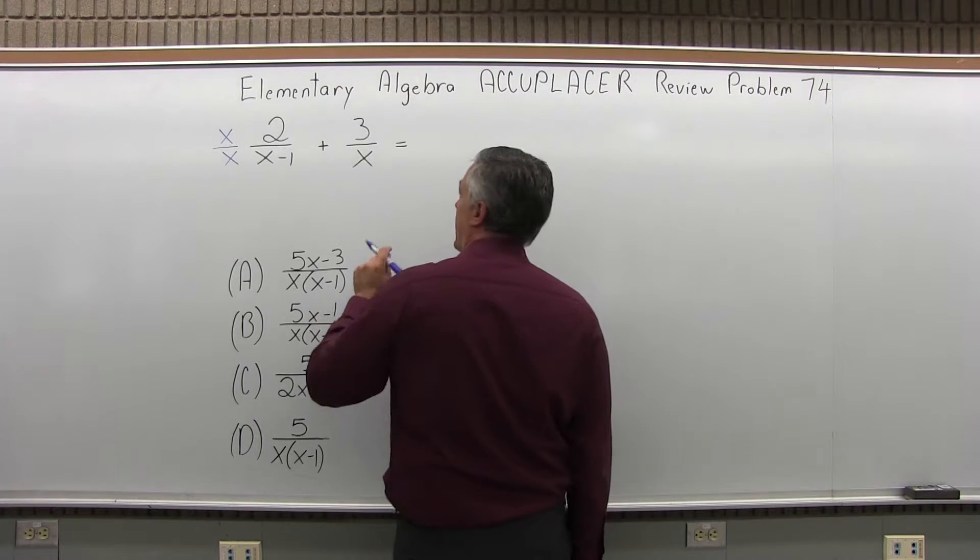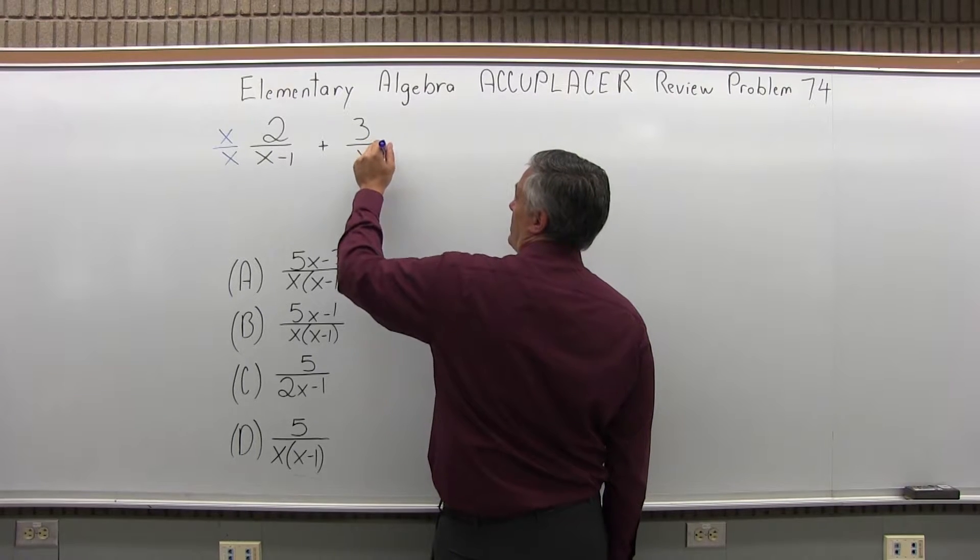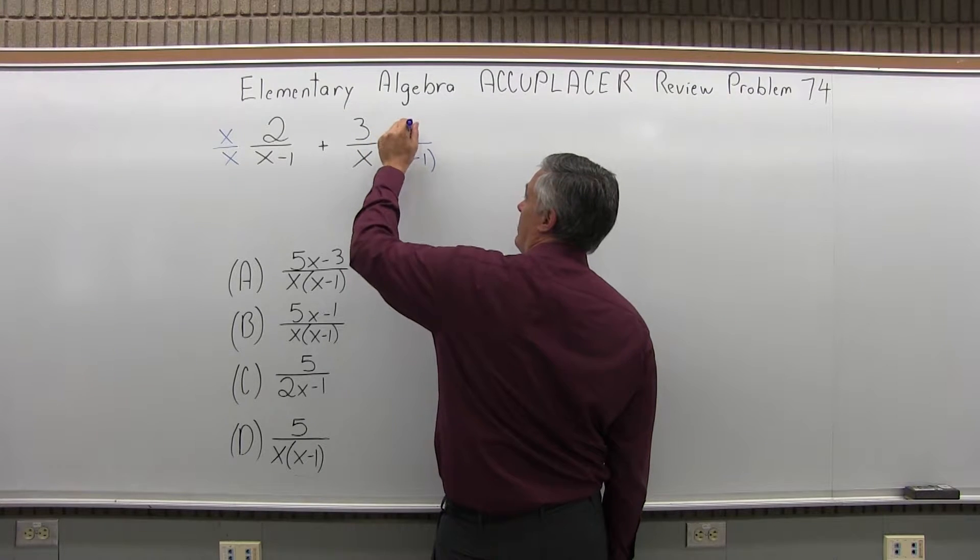Now the second fraction has an x in the bottom, so I want to multiply times x minus 1 in both the top and the bottom.